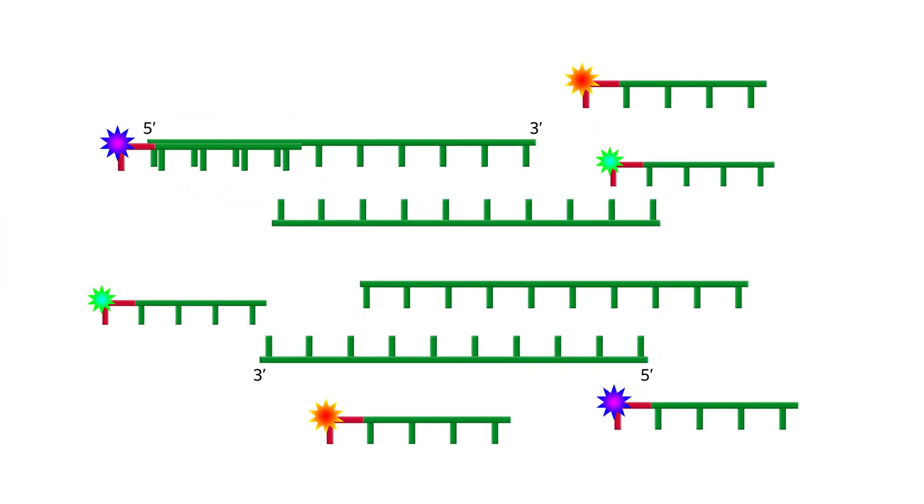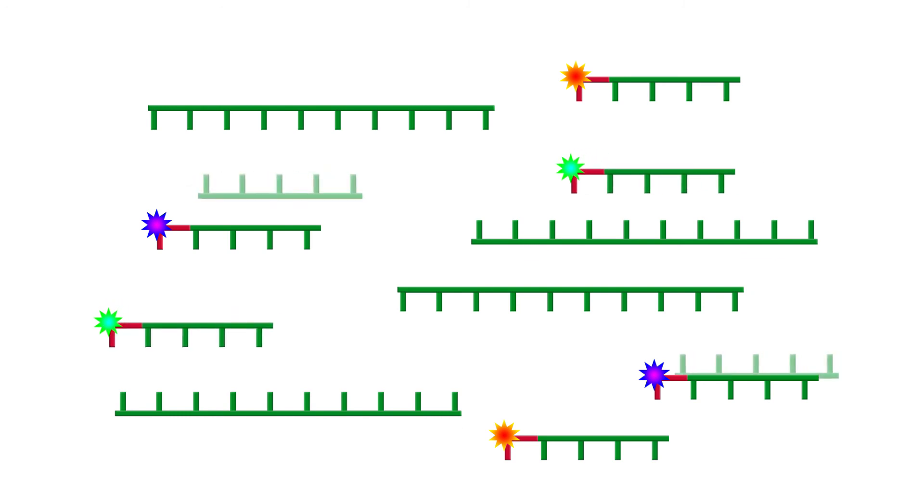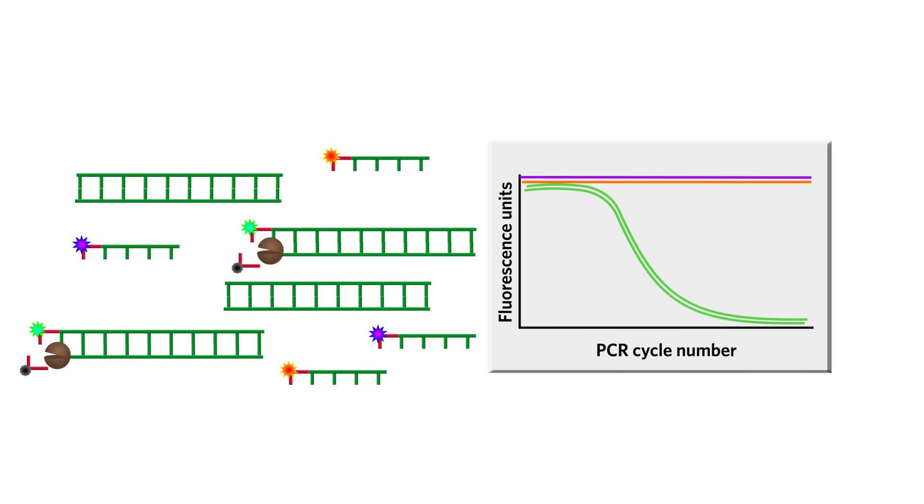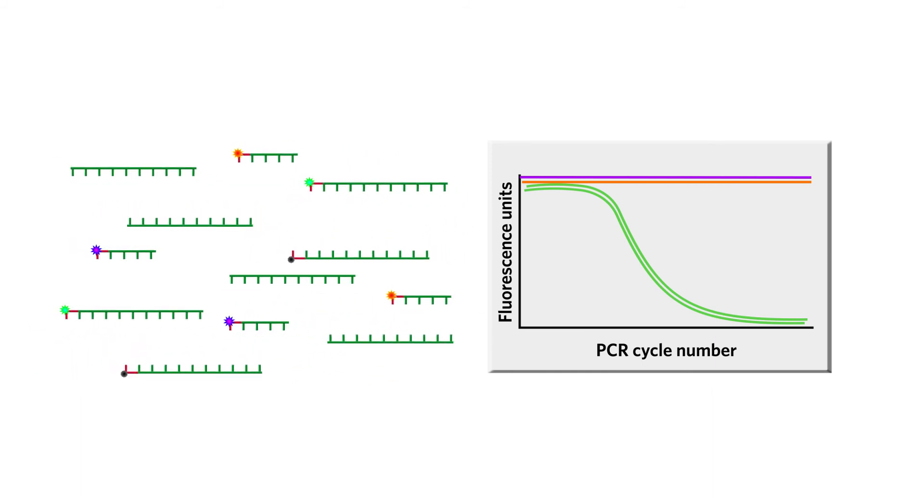Multiplexing in Multicode is achieved by using different reporters to attach to iso-C. The fluorescence will not change for the targets that are missing but will decrease during PCR cycles if the target is present.